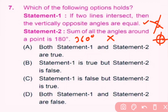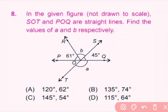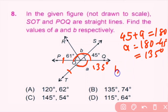So statement 1 is true and statement 2 is false. B is the correct answer. Question number 8: In the given figure, SOT and POQ are straight lines. Find the values of a and b respectively. These two angles are supplementary, so a equals 180 minus 45, which is 135 degrees. For angle b, the sum of the three angles on the straight line is 180, so b equals 180 minus 61 plus 45, which is 180 minus 106, giving b equals 74 degrees. B is the correct answer.